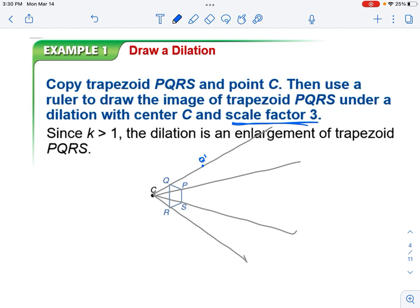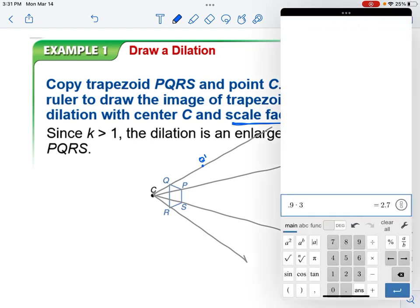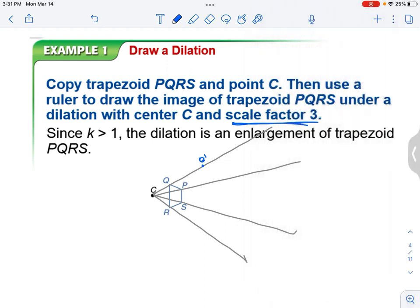I'll do a similar thing. I'll now measure from C to P, my bad. And it's about 1.4 centimeters. So I'm going to take 1.4 times my scale factor of 3. And I'm going to put a point at 4.2. So I have a point at 4.2. That is called P'.